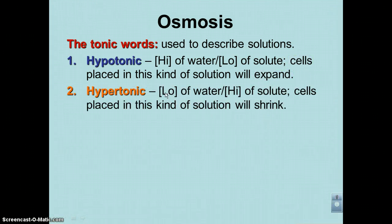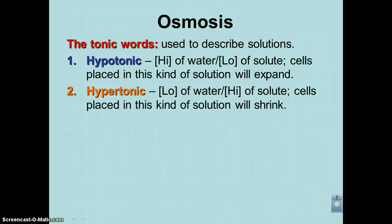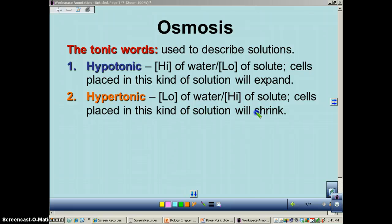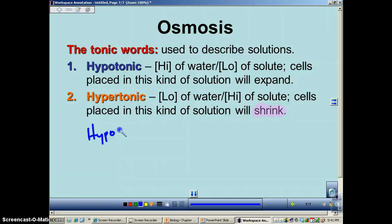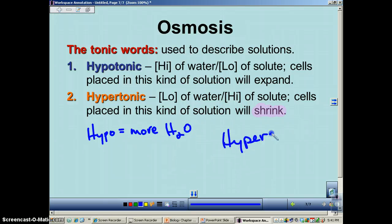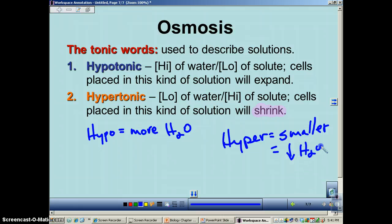The next is hypertonic — low water, high amount of solute. The hyper part refers to the high solute. A helpful memory: hyper gets smaller, because water will leave and a cell will shrink. Hypo means more water; hyper means smaller, because you have less water. The words really deal with how much solute is present. Hyper means high activity — high amount of solute; if you have a lot of solute, you have less water. Hypo means low solute, which means more water.